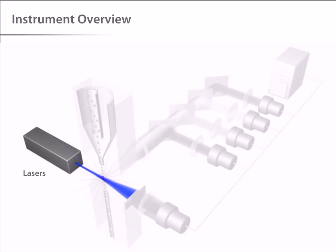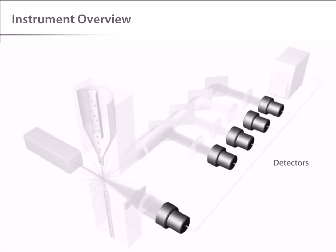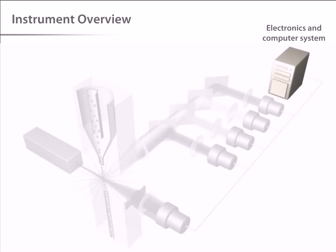the lasers, which are the light source for scatter and fluorescence, the optics, which gather and direct the light, the detectors, which receive the light, and the electronics and peripheral computer system, which convert the signals from the detectors into digital data and perform the necessary analyses.